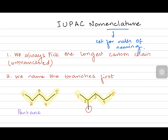A one-carbon branch is called methyl. So we call it methylpentane, not just pentane. But we also indicate the position of the methyl — you can see the methyl is attached on carbon number two. So you will call it 2-methylpentane.